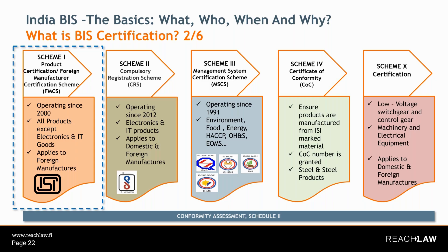Scheme 10 is applicable to products needing to meet specific requirements outlined in the relevant Indian standard. It differs from other schemes by offering manufacturers the option of either a license for continuous production or a certificate of conformity for batch production. This flexibility is particularly useful for products not manufactured on a continuous basis but requiring high quality standards. Each certification type has a separate BIS department to which the application must be submitted.